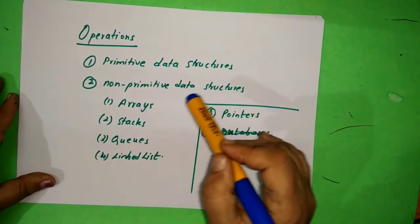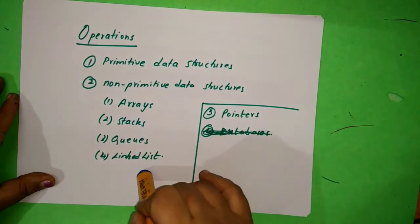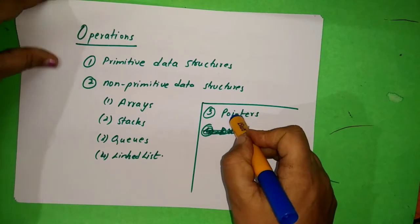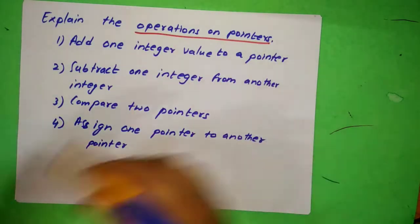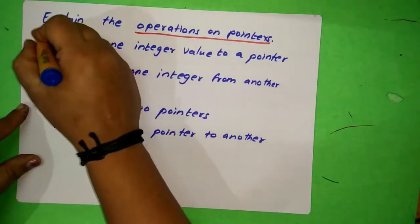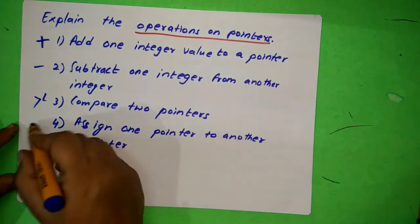Apart from that, when they ask non-primitive data structures, you have arrays, stacks, queues, and linked lists. They also ask about pointers - what are the operations on pointers? So what do you write? It's very easy. Pointers: add, then you have subtract, then you compare - greater than, less than - and you assign.